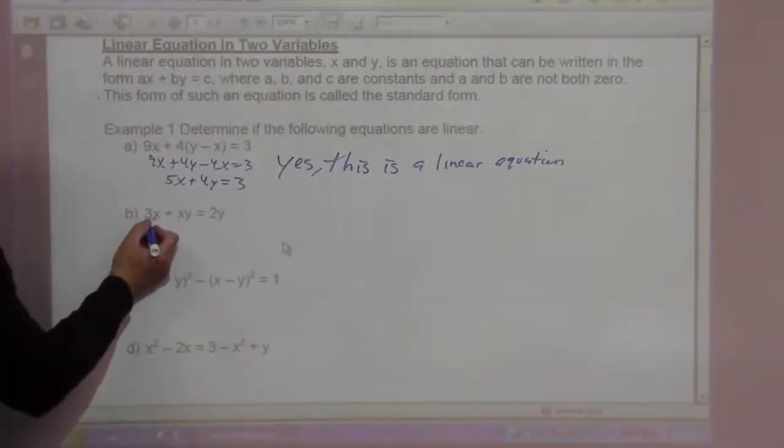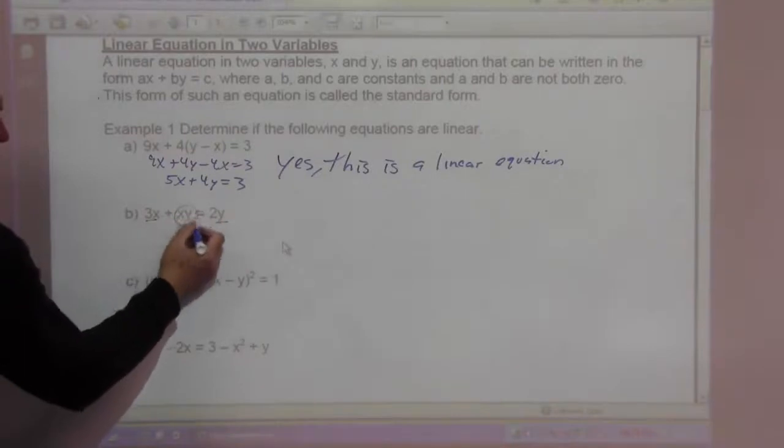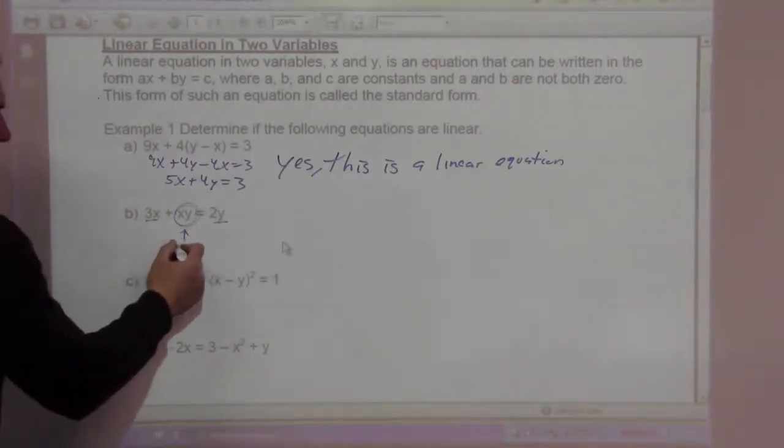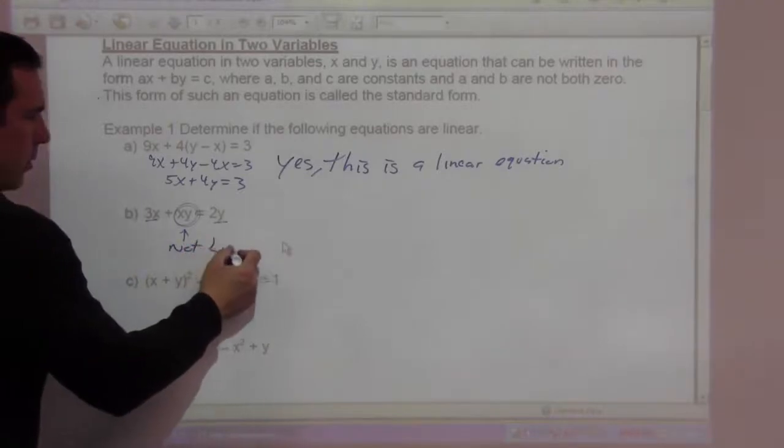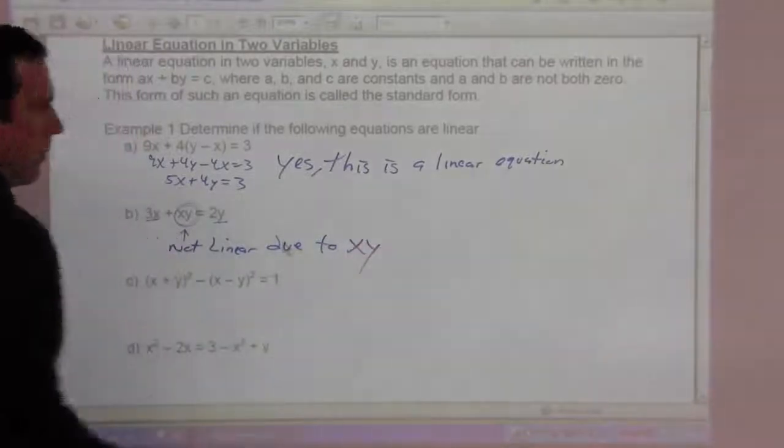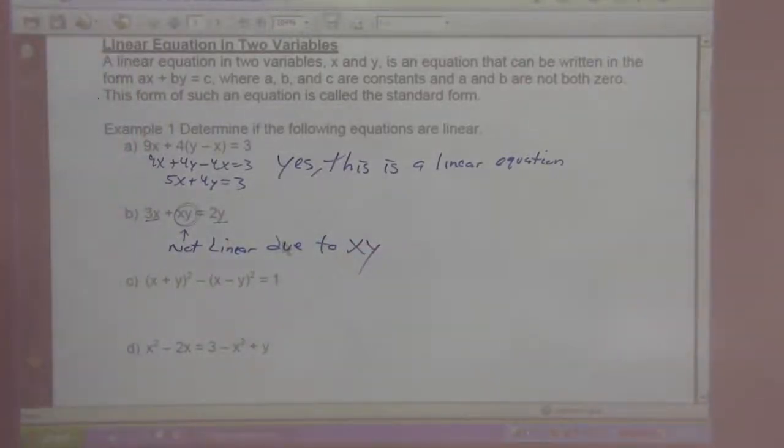But the next one, we have 3x, we have 2y, but we have this xy. With that product in there, that's not going to be linear. So x times y makes this not linear.